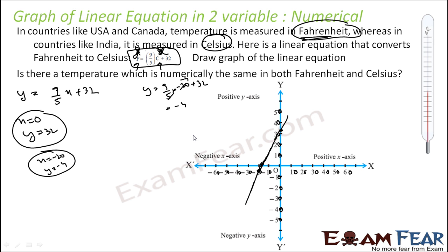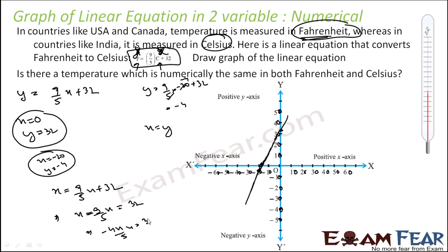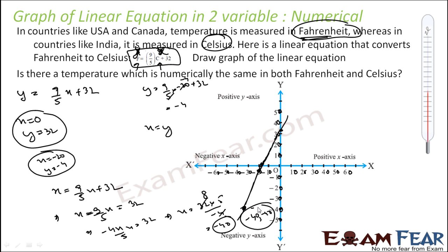We also have to find where Celsius and Fahrenheit are the same, i.e., where x equals y. Substituting: x equals 9 by 5 times x plus 32. Solving: x minus 9 by 5 x equals 32, which gives (5 minus 9) by 5 times x equals 32, so minus 4 by 5 times x equals 32, giving x equals minus 40. So minus 40 degrees is the temperature where Fahrenheit and Celsius are equal. Graphically, the point (minus 40, minus 40) is where both values coincide.